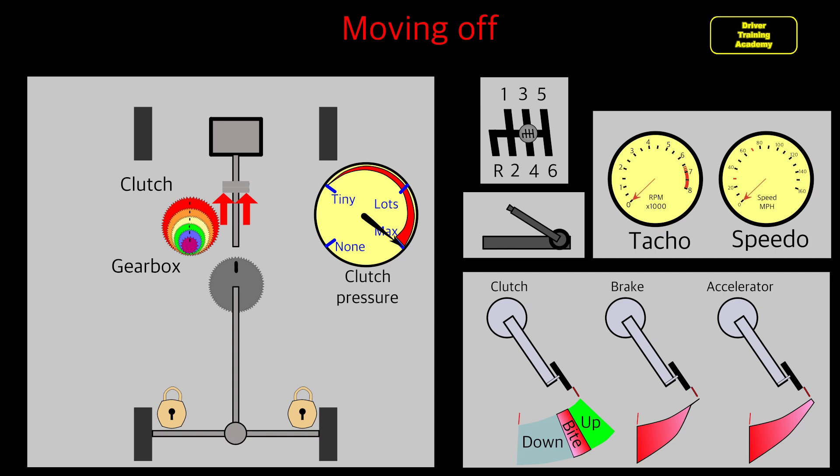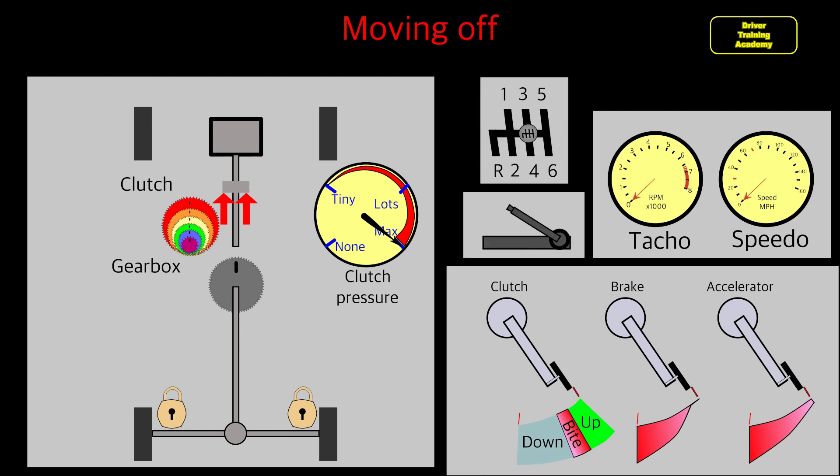In this video we'll look at moving off from a stationary position on flat, uphill, and downhill roads. The diagram shows your tachometer and speedometer, gear selection lever, handbrake, and pedals.